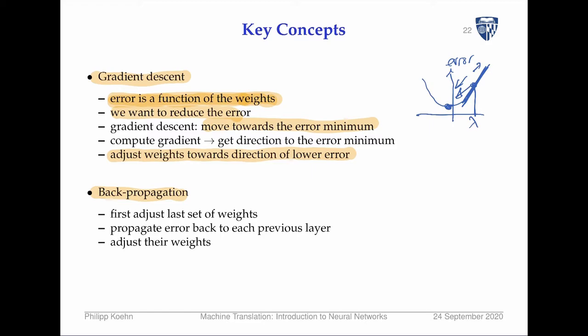We can adjust the weights of the last layer directly since we know what the output should be. But for intermediate stages we don't know what the hidden node values should be. This is where backpropagation comes in — a principled method to propagate the error back to previous layers so we can adjust the weights there as well.